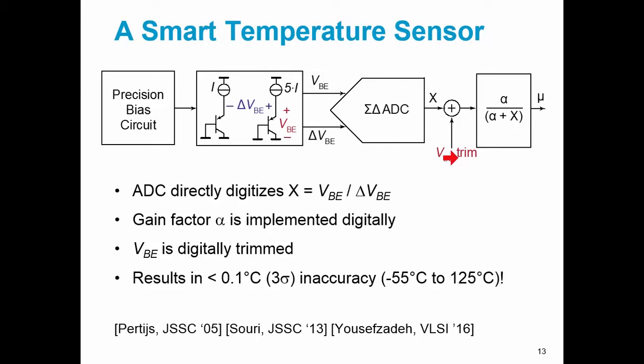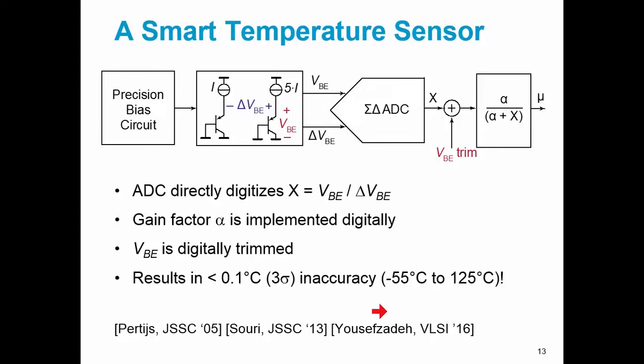And following this approach, we have been able to design time and time again, smart temperature sensors with an inaccuracy of less than 0.1 degree over the military range. And for a lot more of the details behind these designs, I refer you to these three papers.